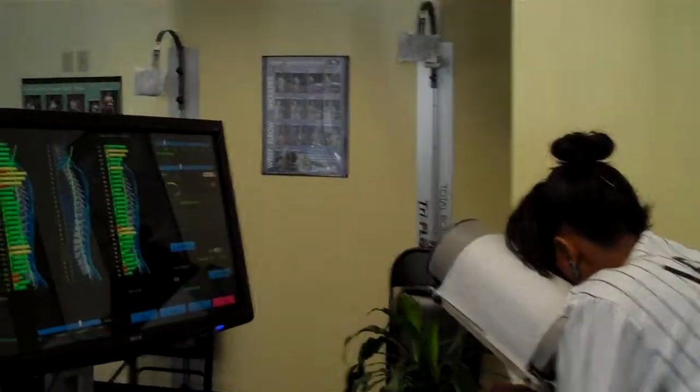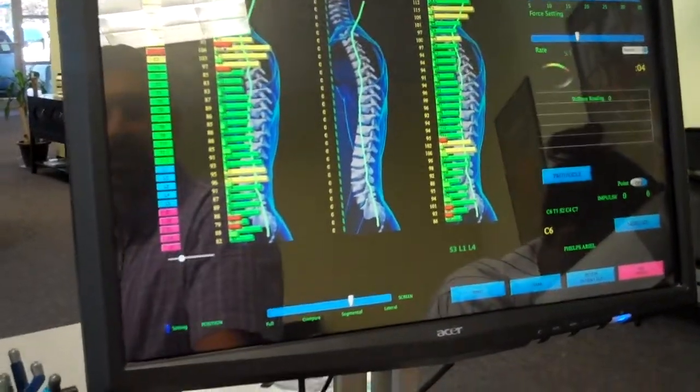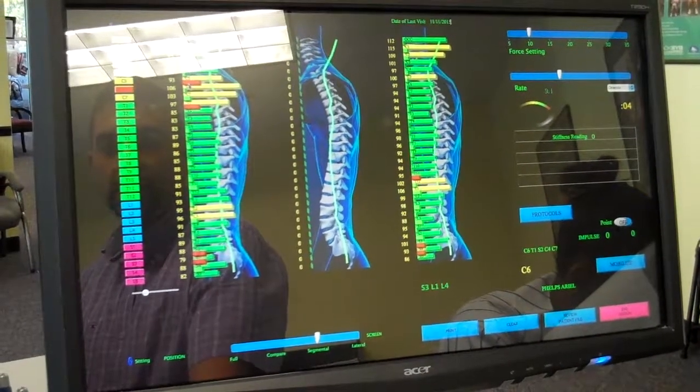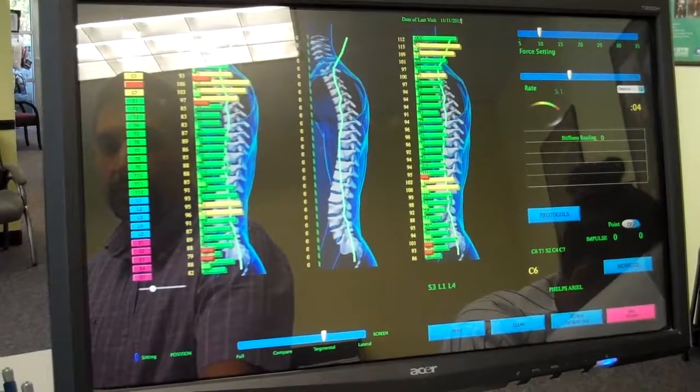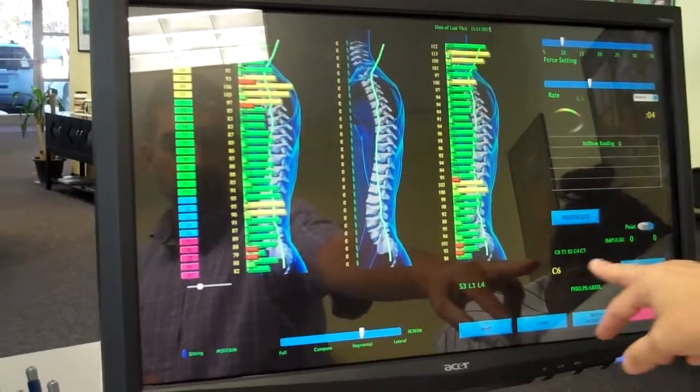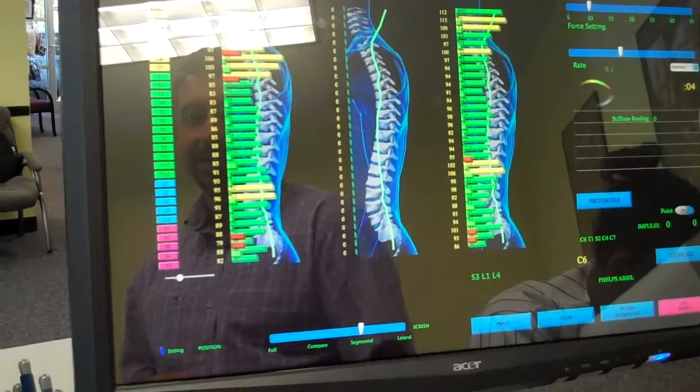Now if we look at the Polestar screen, one thing to keep in mind is that the areas that are flagged in red are the areas that are fixated and need to be adjusted. The areas that are flagged in yellow are surrounding muscle tension. So what we're going to do is utilize the smart intelligence of the ProAdjuster where it's already pre-picked the areas that need to be adjusted.